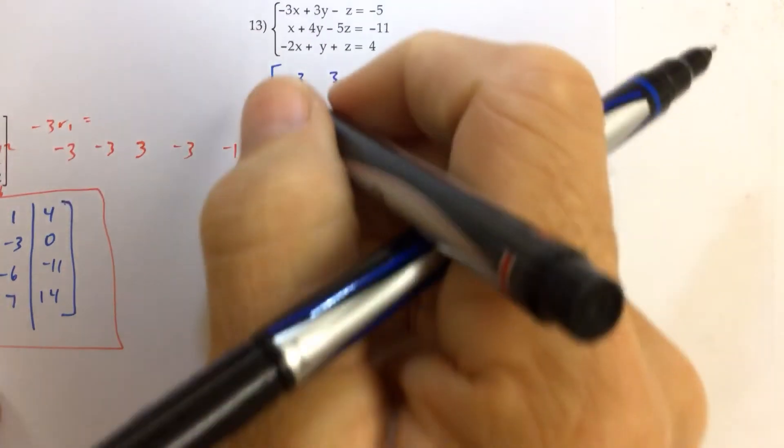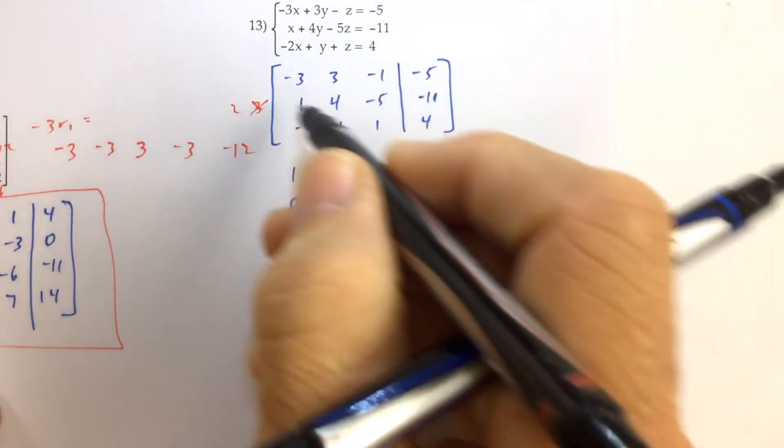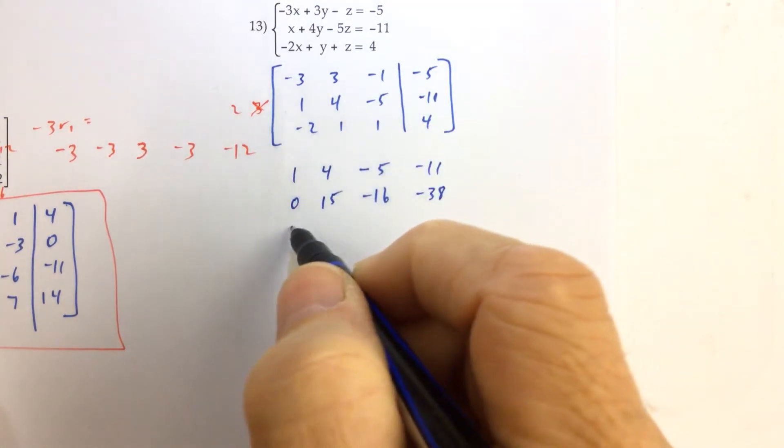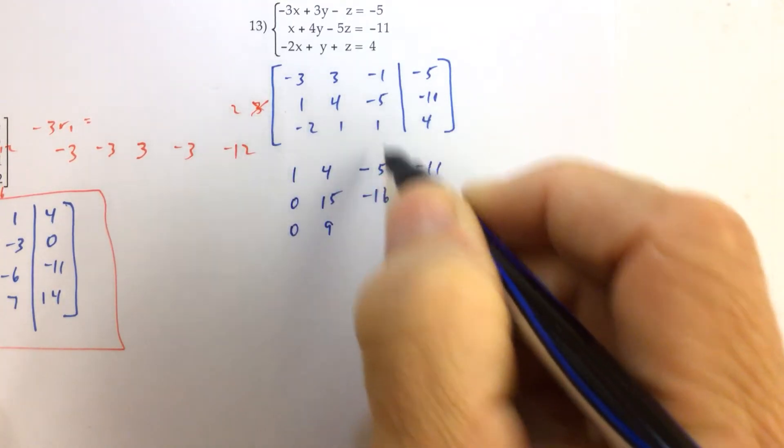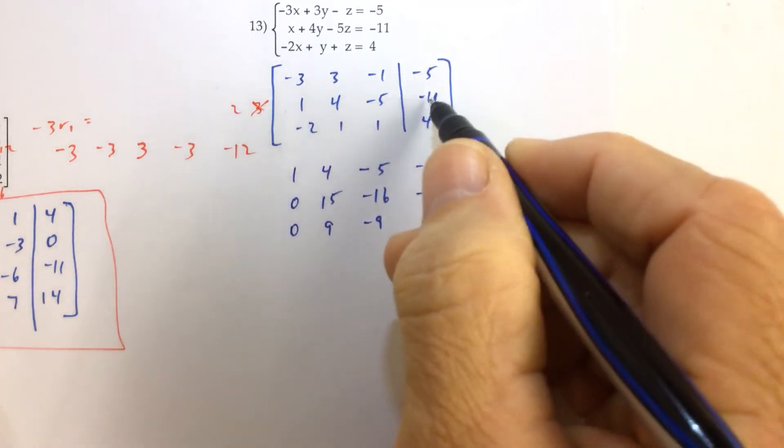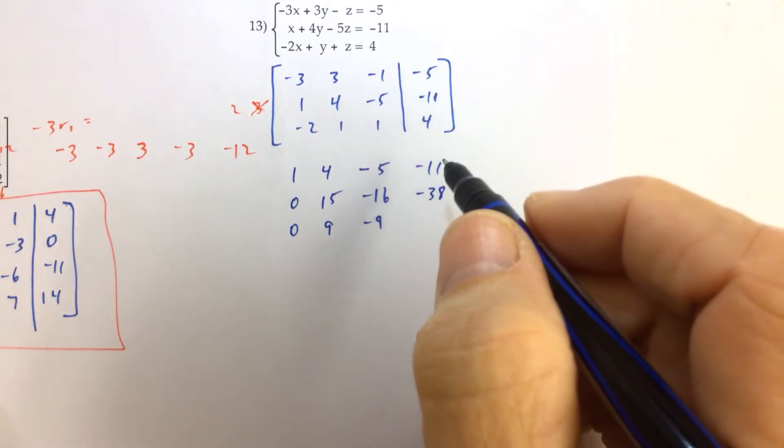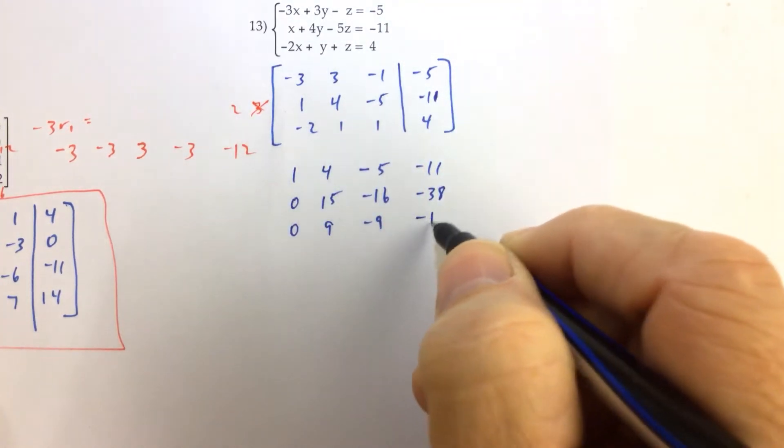Then, after I'm done doing that, I'm now going to notice that if I multiply this row by two and add it to this third row, that's going to become my new third row. Two plus negative two is zero. Eight plus one is nine. Negative ten and one is negative nine. Negative twenty and four is negative, what is that? That's a negative eleven, sorry. Negative twenty-two and four is negative eighteen.